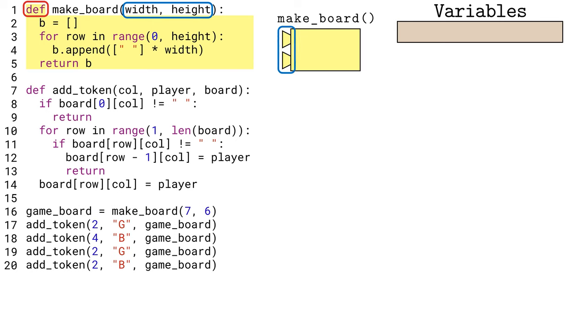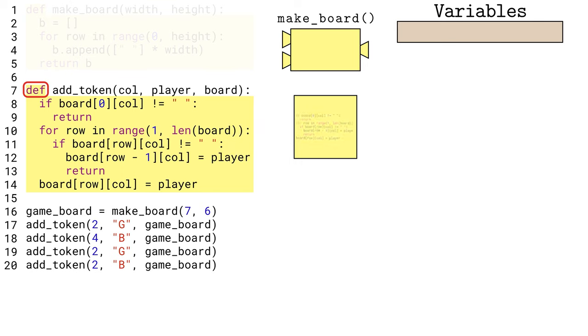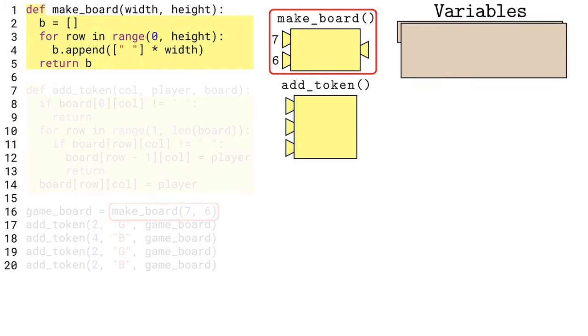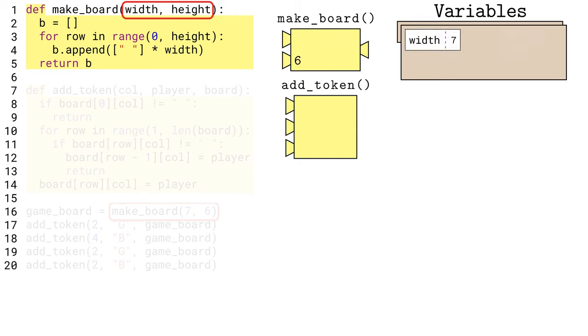MakeBoard has two input parameters and one output. Line 7 defines the addToken function to have three input parameters and no outputs, that is, there are no values or variables after the return statements. Defining those two functions essentially puts the code aside for later. Line 16 is where we actually call a function, telling Python to run the makeBoard code, using 7 and 6 as the two inputs. This is the traditional size of the Connect 4 board. Python creates a new variable scope to hold the variables in this function call, starting with the two parameters width and height.